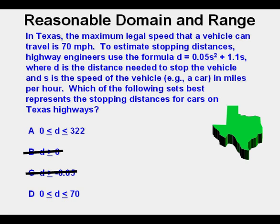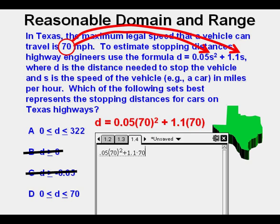So it has to be between answers A and D. What we need to do is plug in the maximum legal speed in Texas, 70 miles per hour, into the formula here in these two places.